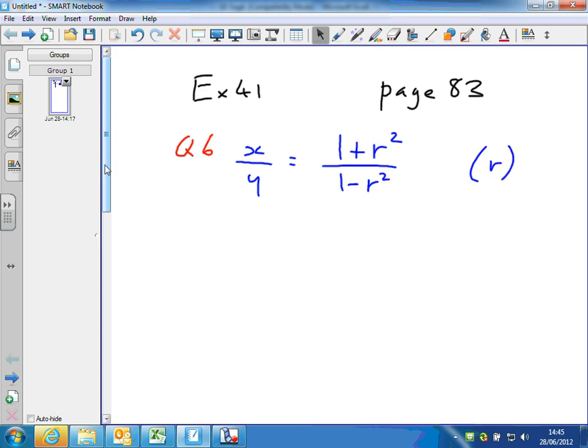So again we have a problem with r occurring more than once, so factorization is likely to come in. We've got also two denominators, two terms. Both terms have parts that are underneath, or denominators. So multiply by them.